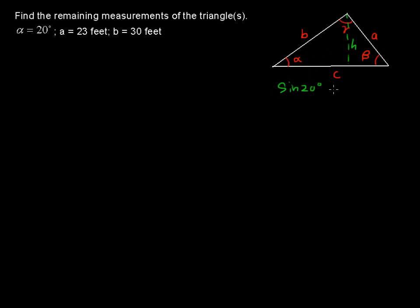Sine of 20 degrees equals H over 30 because this is 30. And for this triangle that I've formed here with this height of H, this angle is still 20 degrees and this side length is still 30. But now we could find H to be about 10.3 feet, just rounding there.